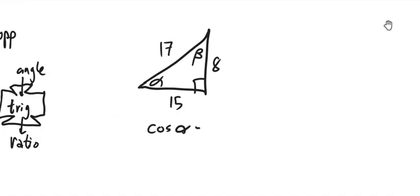Cosine of alpha would be—well, cosine is CAH, adjacent over hypotenuse—so it would be 15/17. And how about cosine of beta? Now with beta, notice it's adjacent to the angle, right?